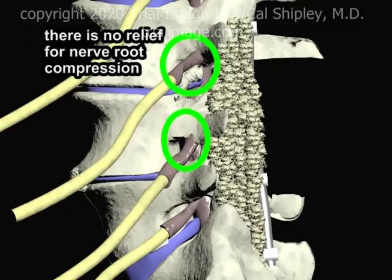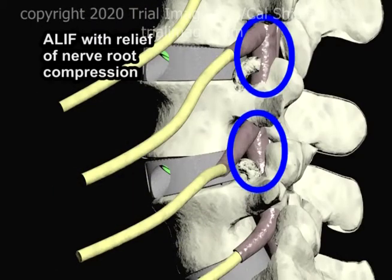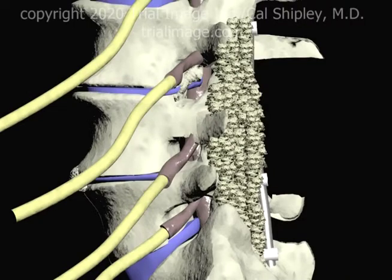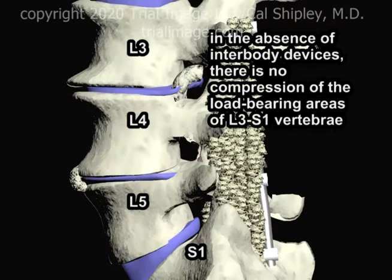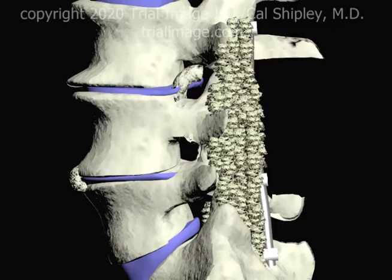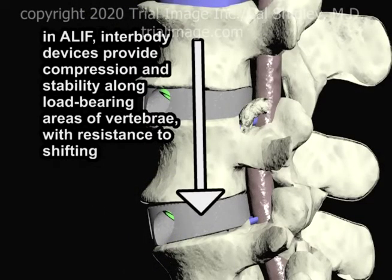There is no relief for neural foramen narrowing with the intertransverse fusion. Contrast that with the ALIF procedure, where the placement of interbody devices restores the spinal architecture and opens up neural foramina narrowed by previous disc collapse. In the absence of interbody devices, there is no compression of the load-bearing areas of the L3 and S1 vertebrae. In the ALIF, interbody devices provide compression and stability along load-bearing areas of the vertebrae with resistance to shifting.